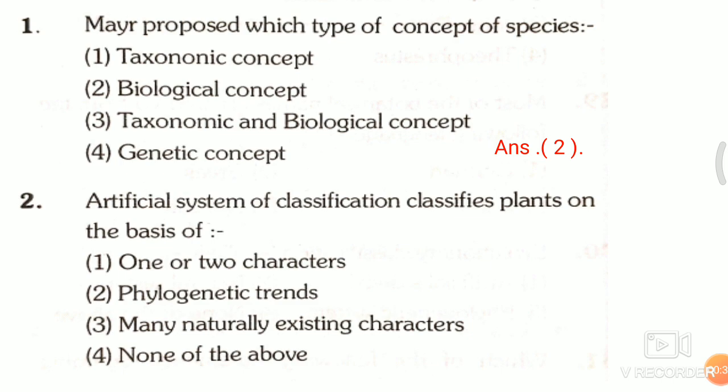Question 2: Artificial system of classification classifies plants on the basis of — first, one or two characters; second, phylogenetic trends; third, many natural existing characters; fourth, none of the above. The answer is the first one, that is one or two characters.